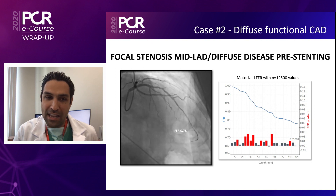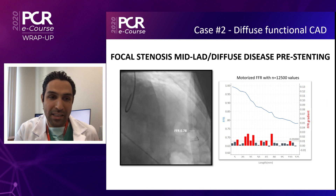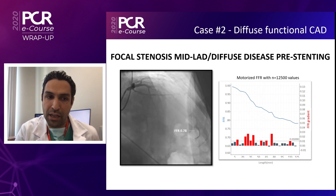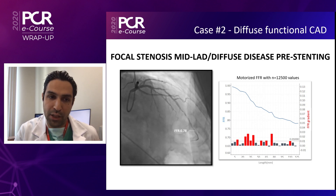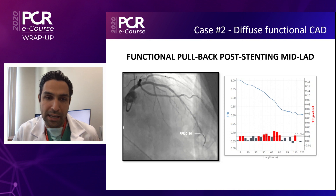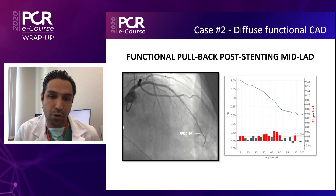Now let's look at diffuse disease. Again an LAD with the same distal FFR of 0.78, but this time the pullback curve shows a diffuse pressure drop without any clear step-up — even though there is an anatomical lesion in the mid-segment. When we perform PCI covering the mid-lesion, the angiographic result looks good, but looking at the pullback curve we gain only a little shift and the FFR remains suboptimal. Coronary physiology was not restored in this case.